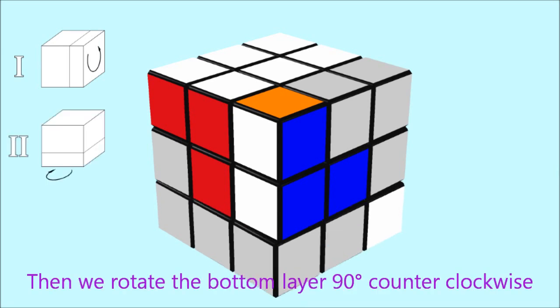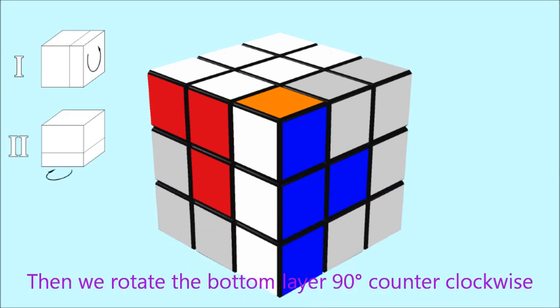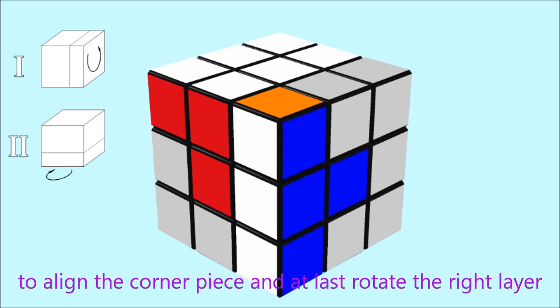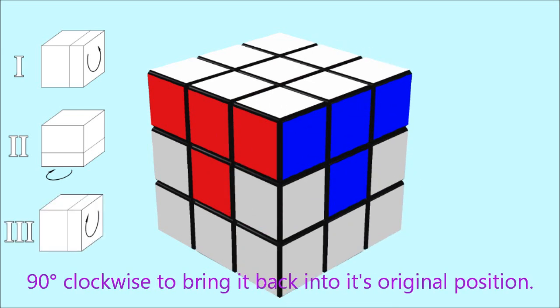Then, we rotate the bottom layer 90 degrees counterclockwise to align the corner piece and at last rotate the right layer 90 degrees clockwise to bring it back into its original position.